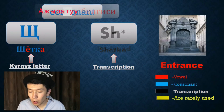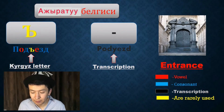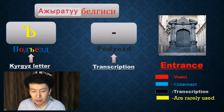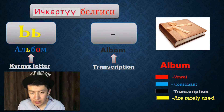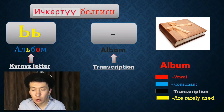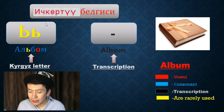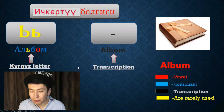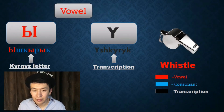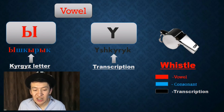This letter is called Ajratuubелgisi. It helps the word to get solid — for example, Padyezd, Entrance. The next one is called Içkertubelgisi. This letter helps the word to get soft — for example, Album. Next letter: Ы — Ышqırık, Whistle.